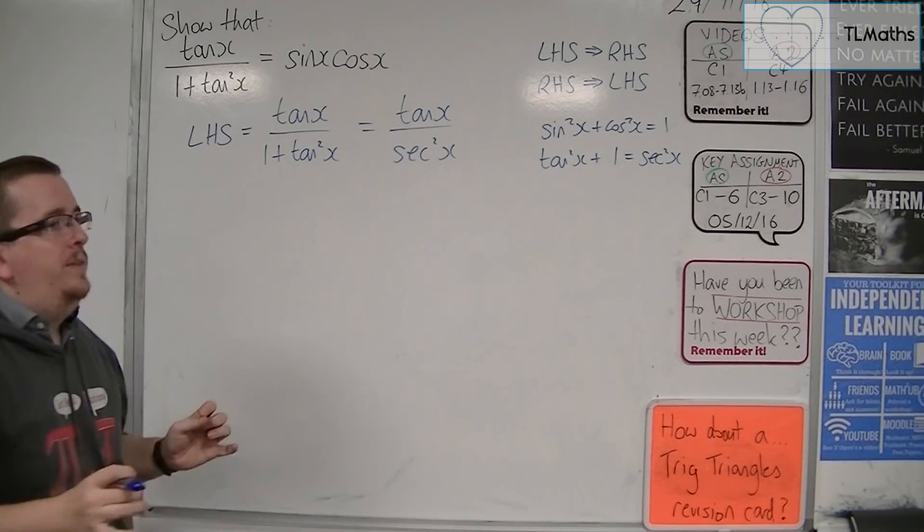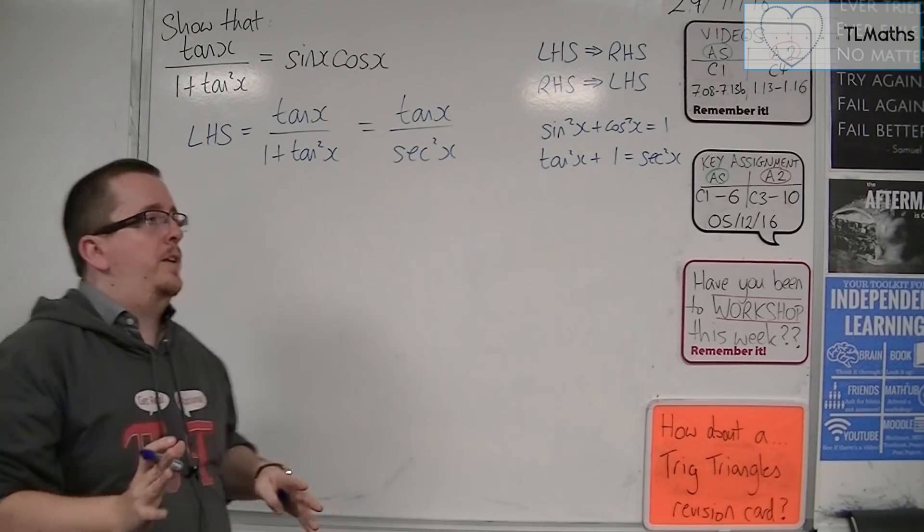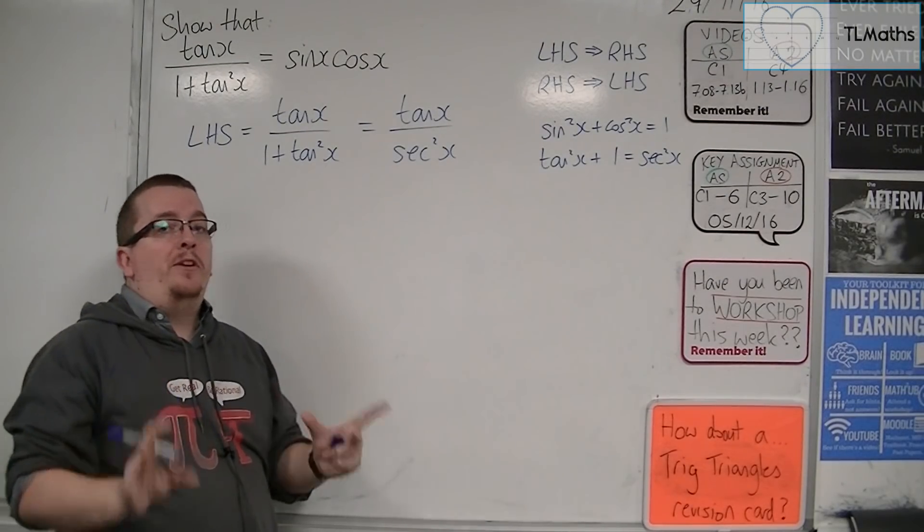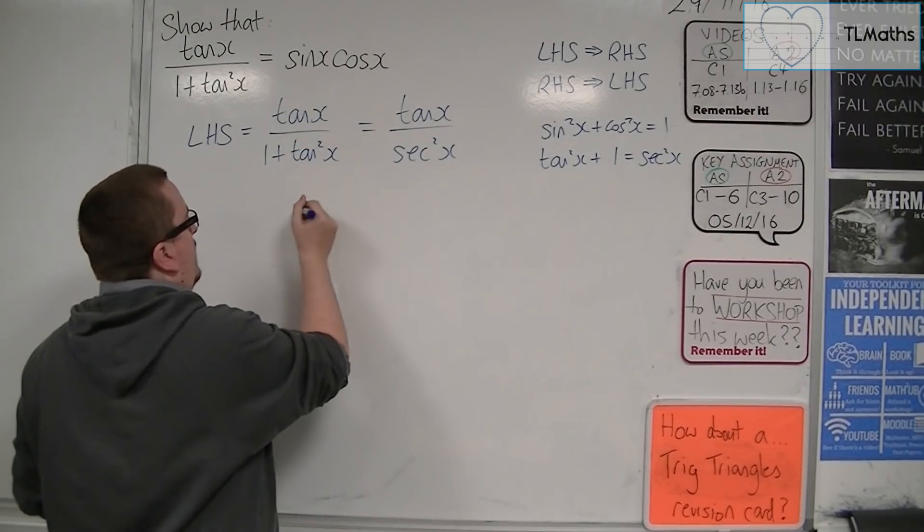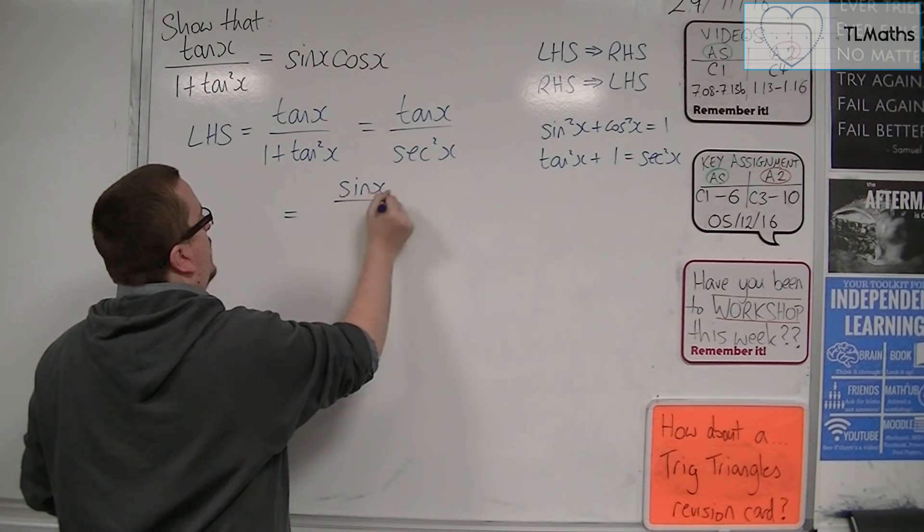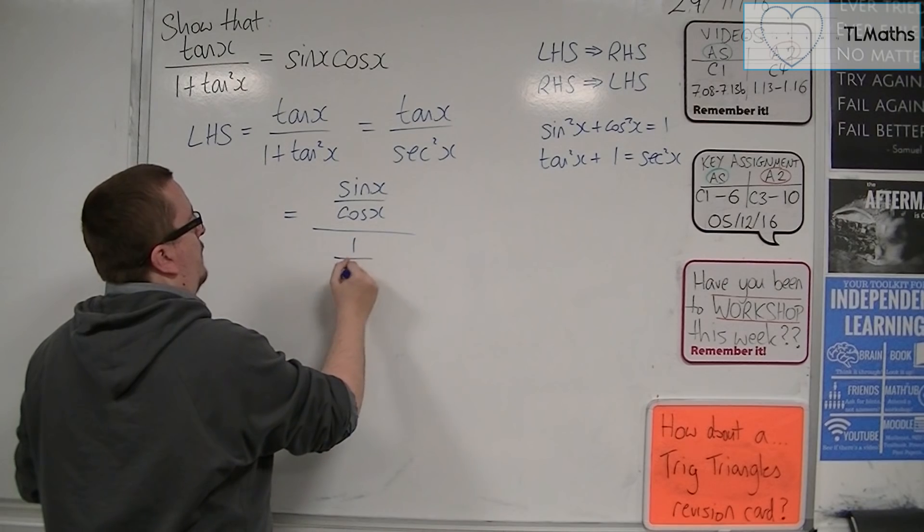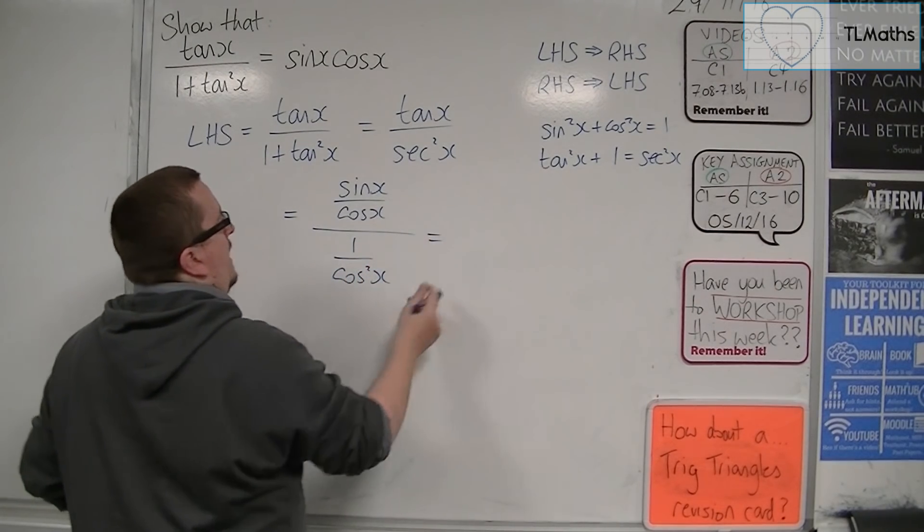At this point, it would be a good idea to turn everything into sines and cosines. Only use this method if it is absolutely necessary. There's nothing more I can do here. So, I'm going to go in and say, well, tan is sin over cos, and sec squared is 1 over cos squared.